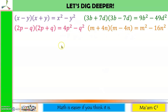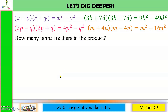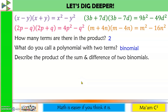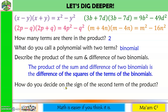Let's dig deeper. Here are the examples we discussed earlier. How many terms are there in the product? There are two terms. And what do you call a polynomial with two terms? We call it a binomial. Describe the product of the sum and difference of two binomials: the product is the difference of the squares of the terms of the binomials. How do you decide on the sign of the second term of the product? This is always negative.